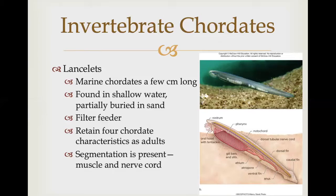Let us discuss some evolutionary trends featured among the chordates. The tunicates and lancelets are invertebrate chordates — they don't have vertebrae. The vertebrates include fishes, amphibians, reptiles (which include birds), and mammals. As embryos, vertebrates have the four chordate characteristics, but during development the notochord is generally replaced by a vertebral column of individual vertebrae. Remnants of the notochord are seen in the intervertebral discs — compressible cartilaginous pads between the vertebrae. The vertebral column, part of a flexible but strong endoskeleton, gives evidence that vertebrates are segmented.